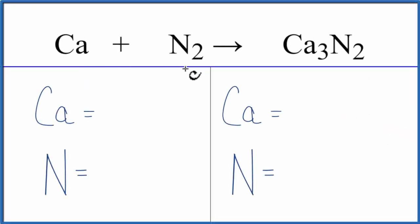To balance this equation, Ca plus N2 yields Ca3N2, let's count the atoms up on each side of the equation.